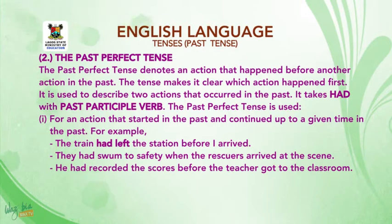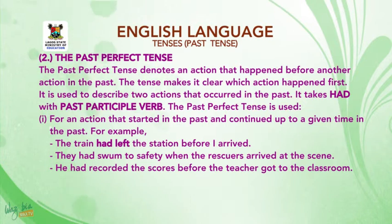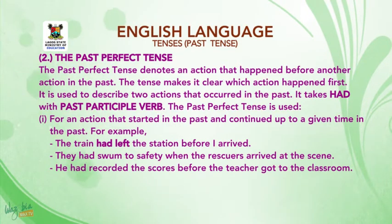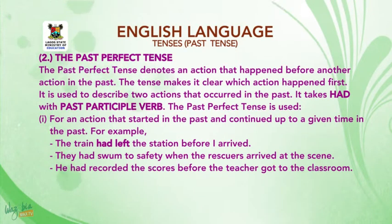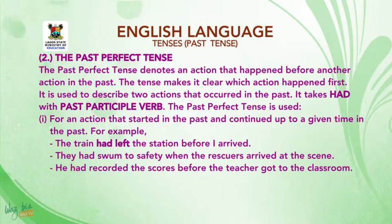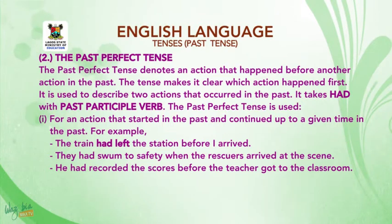The Past Perfect Tense denotes an action that happened before another action in the past — it indicates two actions which started and were concluded in the past, with no relation to the present situation. The Past Perfect Tense will always take HAD with a past participle verb.